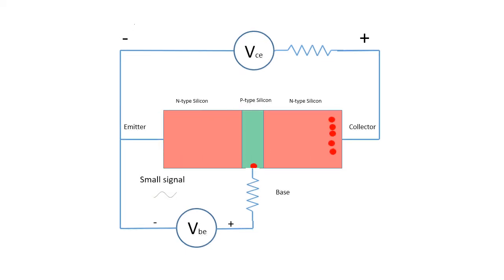If we superimpose a time-varying signal on the DC voltage on the base of the transistor, then this will cause a much larger variation in the current through the collector and the emitter. By doing this, the transistor becomes an amplifier.